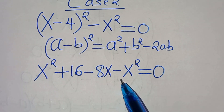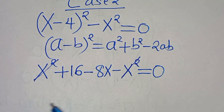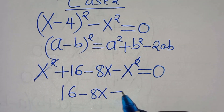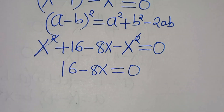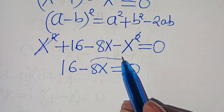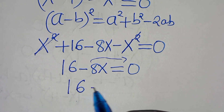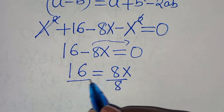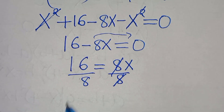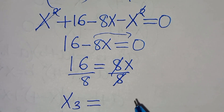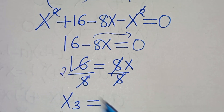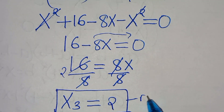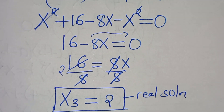Now x squared minus x squared simplifies to zero, so we have 16 subtract 8x equals 0. Taking minus 8x to the right-hand side gives 16 equals 8x. Dividing both sides by 8, we get x₃ equals 16 divided by 8 equals 2. This is the only real solution for this algebra problem.